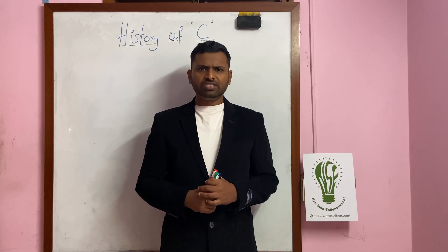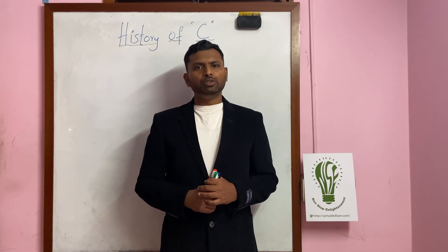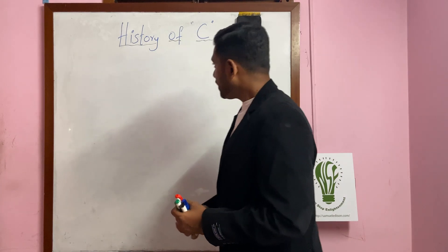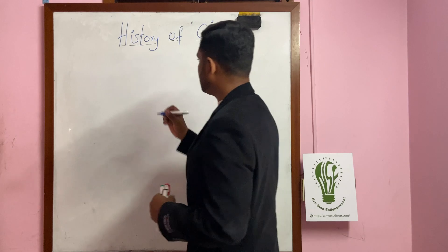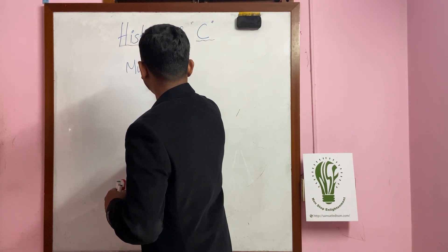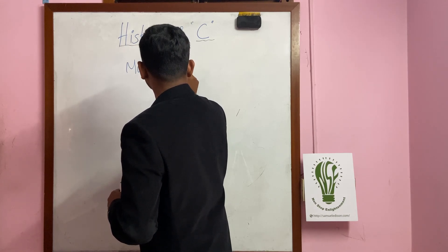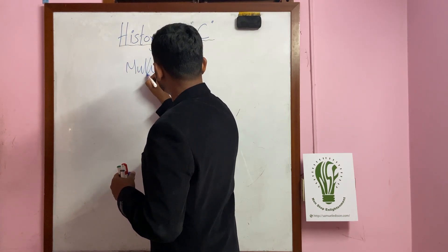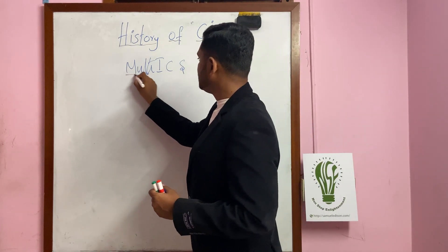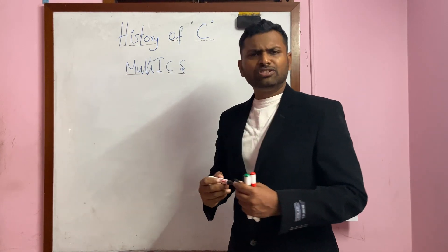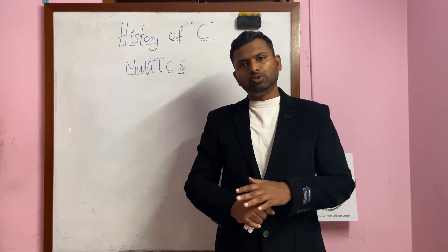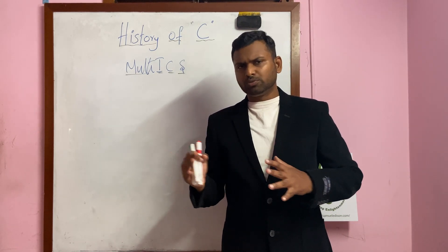I am not going to take much of your time — just hold your seat tight. Bear with me a few minutes to understand the history of C. There was an operating system called Multics. This was an operating system which was widely used in the 60s — early and late 60s. It was widely used by developers, researchers, and those kinds of people.